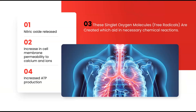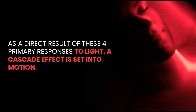The four primary responses are: 1. Nitric oxide release, which creates vasodilation of the blood vessels — they enlarge, allowing more blood and more oxygen to flow throughout the body. 2. Cell permeability, meaning important minerals and ions are now able to enter the cells to allow the cell to thrive. 3. Singlet oxygen, or free radicals, are produced — oxygen molecules with an uneven number of electrons — which in small amounts is beneficial to encourage chemical reactions in our bodies. 4. ATP energy production. As a direct result of these four primary responses to light, a cascade effect of secondary responses is set into motion.